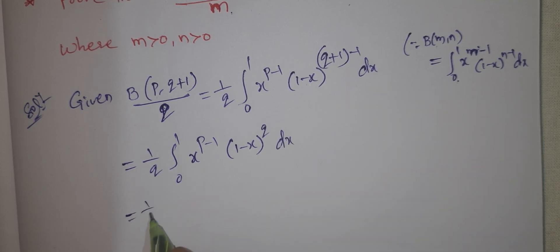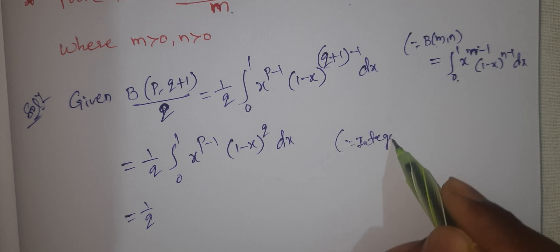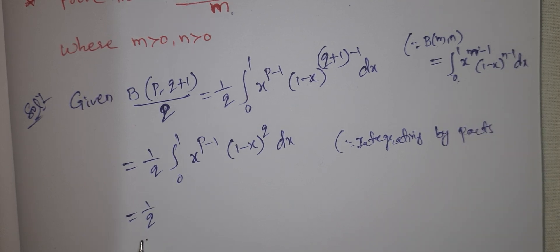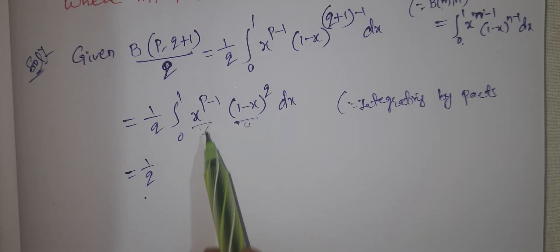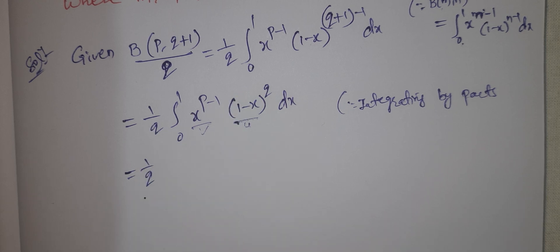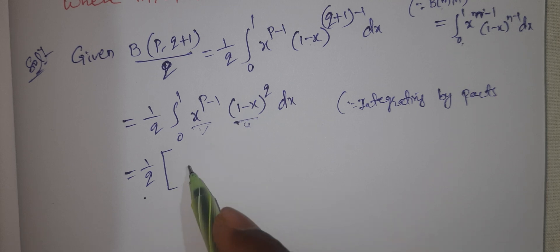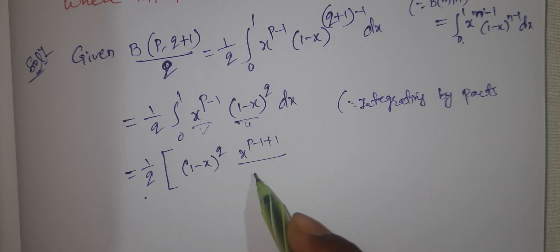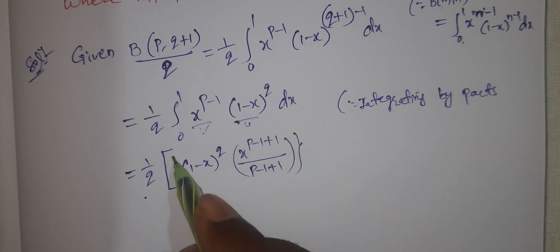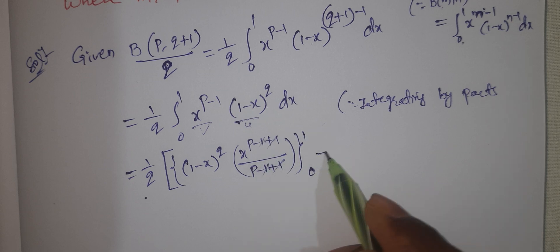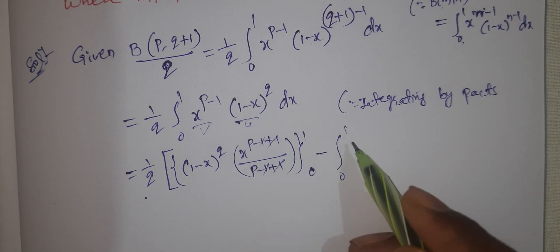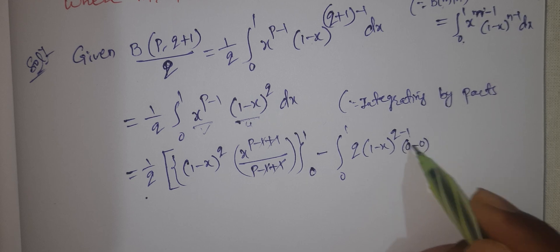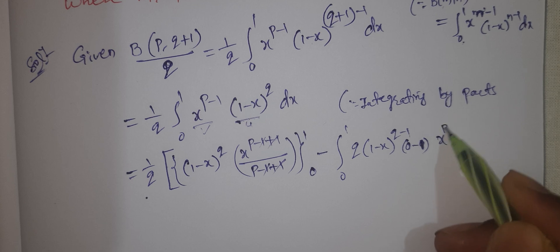Now integrating by parts, with u and v. If we have q in the denominator, we take u1 and v1 so that q will cancel. Integrating, we get the integral of p minus 1 plus 1 over p minus 1 plus 1, from 0 to 1. The derivative gives q times 1 minus x to the power of q minus 1 times negative 1, times x to the power of p by p.